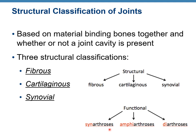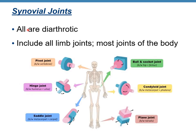Functional classification includes synarthrosis, amphiarthrosis, and diarthrosis — non-movable, slightly movable, and freely movable. Synovial joints are all diarthritic, freely movable, and include all limb joints and most joints of the body. We have major types of synovial joints here.